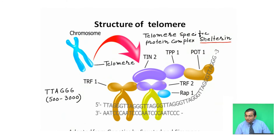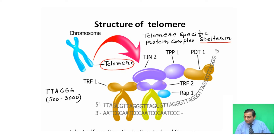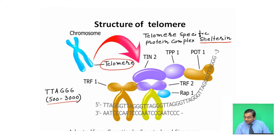The end of the chromosome is known as the telomere. The telomere protects the chromosome from the action of enzymes and other factors. The telomere consists of 500 to 3000 TTAGGG repeat sequences in vertebrates.